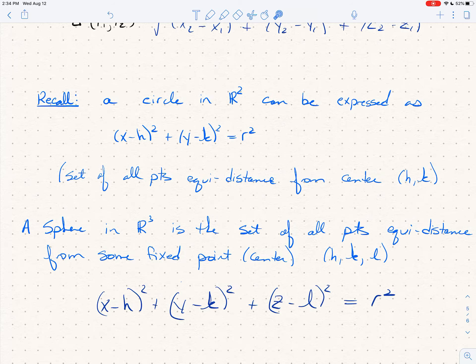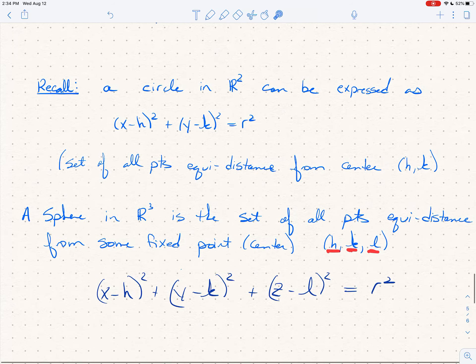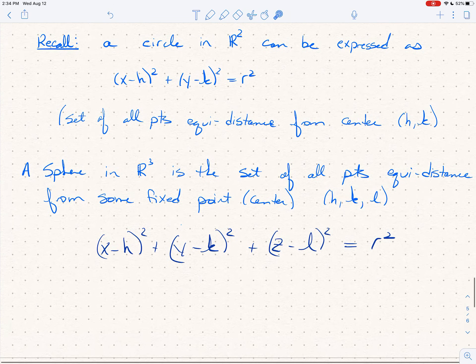And so the equation of a sphere—here's the thing that I want you to realize—is (x - h)² + (y - k)² + (z - l)² = r². This gives me the equation of a sphere with radius r, not r squared, radius r, and center (h, k, l).